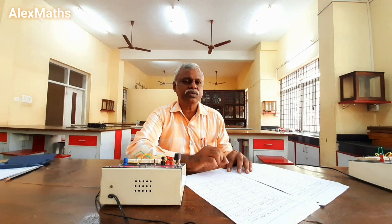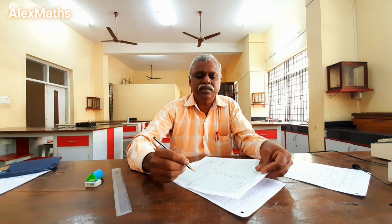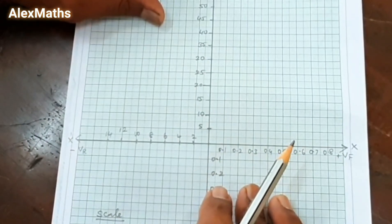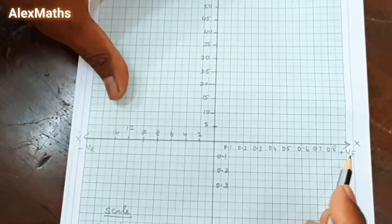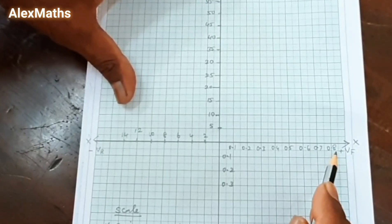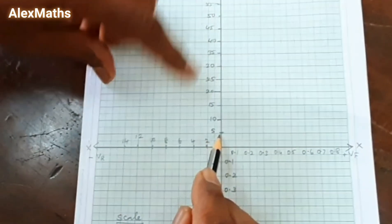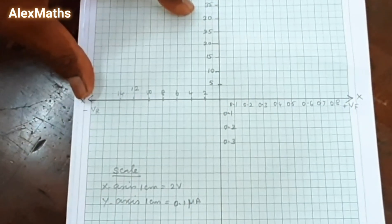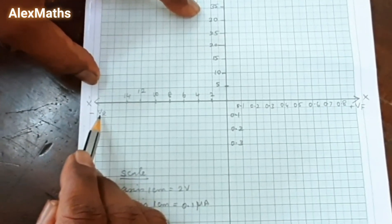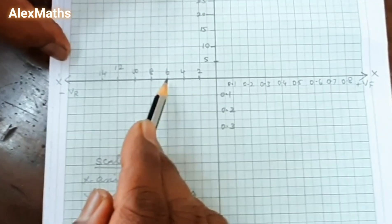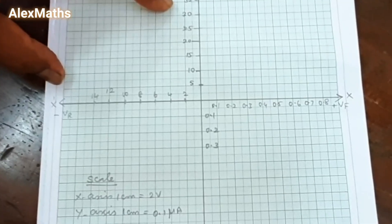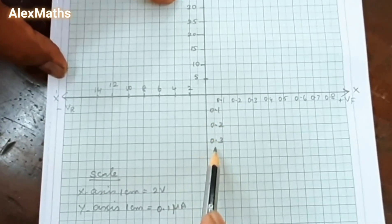You have to find out the knee voltage as well as the forward resistance. For the graph, first draw the forward bias curve: in the x-axis take the forward voltage (0.1, 0.2, 0.3, 0.4 up to 0.8V), and in the y-axis take the forward current in milliampere (5, 10, up to 60 milliampere). For reverse bias, in the x-dash axis take the reverse voltage (2V, 4V, 6V, 8V and so on), and in the y-axis take the reverse current in microampere (0.1, 0.2, 0.3 and so on).